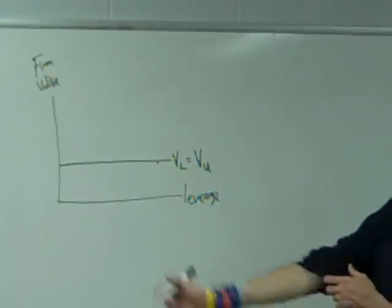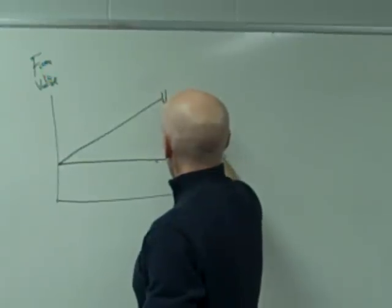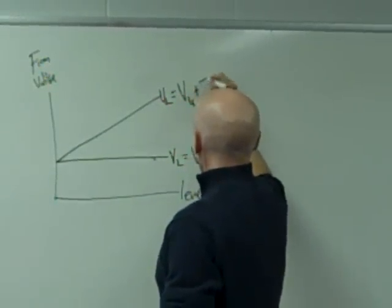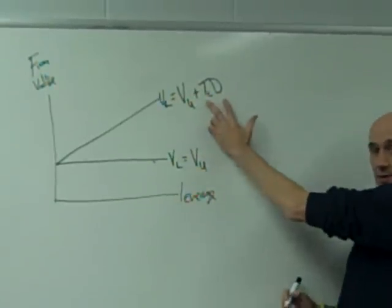Then we relaxed in the corporate tax deduction. What we see is that firm value of a levered firm is greater than the value of an unlevered firm by the amount of the tax saving. This is the interest tax shield in perpetuity.